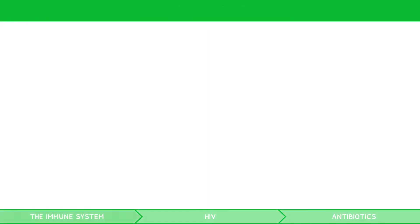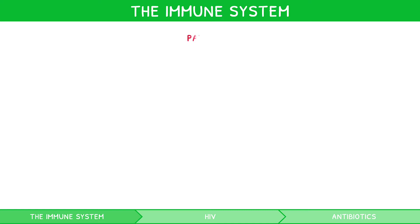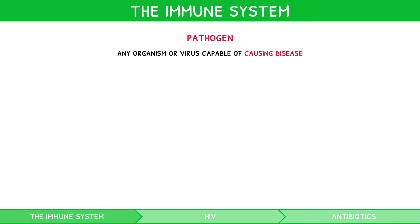Before outlining the immune system, it is first necessary to define an important term used in this context: a pathogen. A pathogen is simply an organism capable of causing disease. Each pathogen is unique, as identified by proteins on its surface known as antigens.